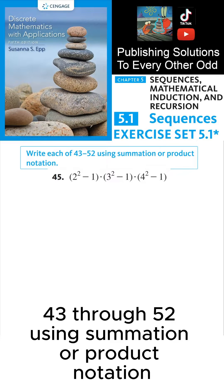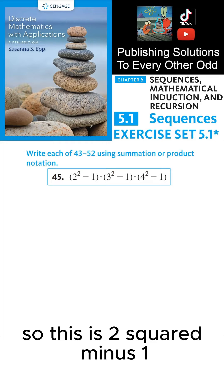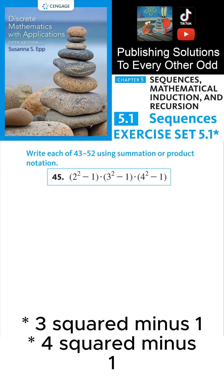Write each of 43 through 52 using summation or product notation. So this is 2 squared minus 1 times 3 squared minus 1 times 4 squared minus 1.